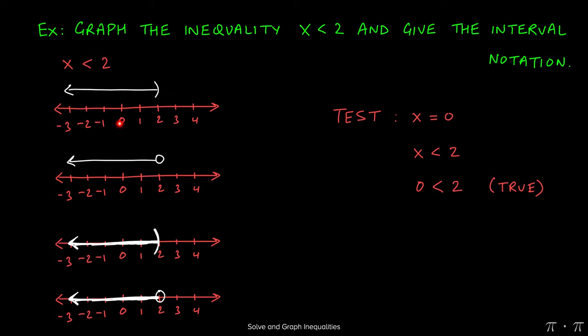Had we plugged in 4 instead of 0, 4 is less than 2 would have given us a false statement. That means we would run away from 4. So again, that confirms we should be going to the left.